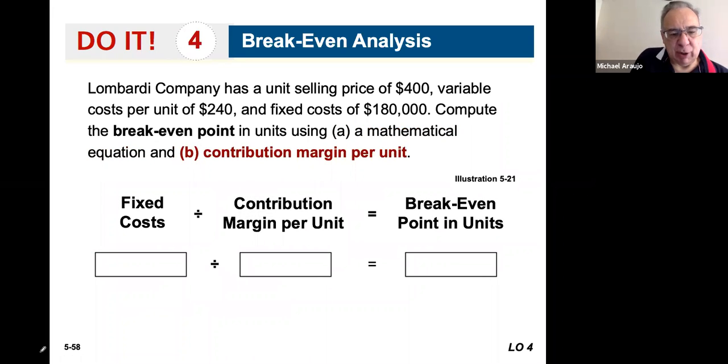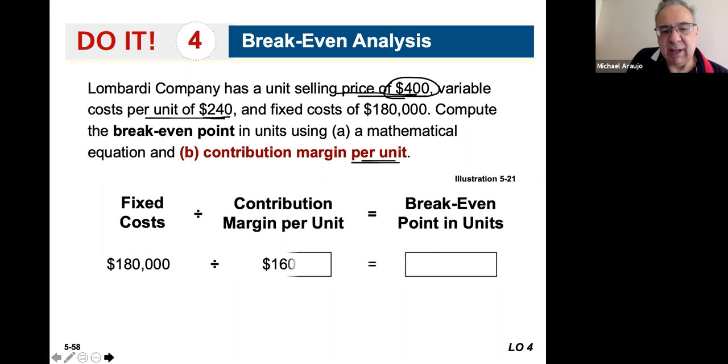B is the contribution margin, right? Well, the contribution margin is the difference between the selling price and the variable cost per unit measured in a percentage. So $400 minus the $240 would give you $160 in contribution margin. $160 contribution margin divided into the $400 would give you the percentage, right? But in terms of per unit, we're looking at fixed costs of $180,000 divided by $160 in contribution margin per unit. And that means that we would have to sell 1,125 units to break even.